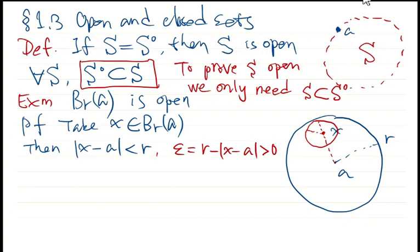Then we claim the ball with epsilon as radius and centered at x is contained in the ball B_r(a). We have this claim. The proof is very easy, and this is a typical application of the triangle inequality.